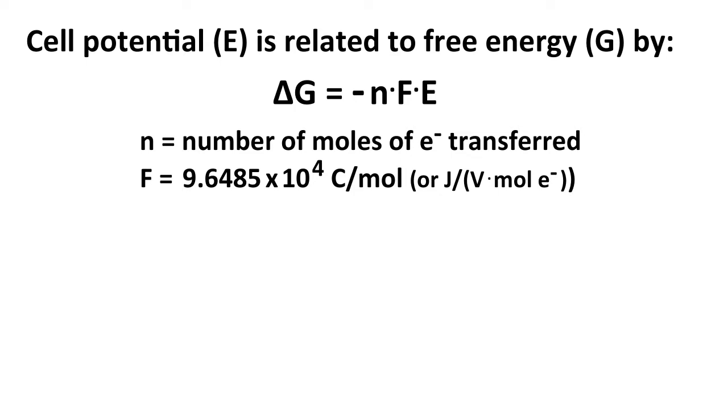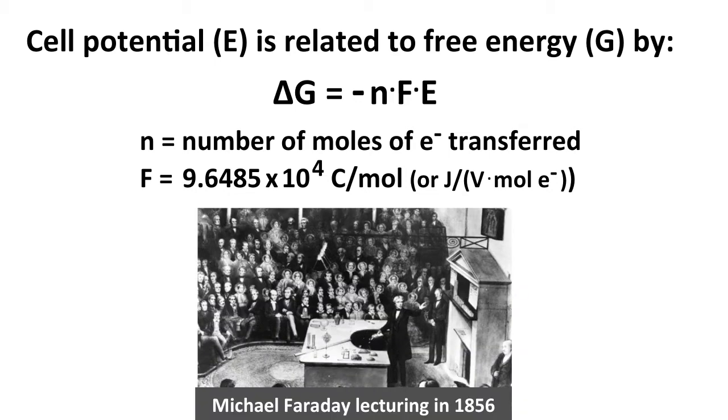N is the number of moles of electrons transferred during that electrochemical reaction. And F is the Faraday constant, which is 9.6485 times 10 to the fourth coulombs per mole, or other units are joules per volt mole. Basically, it's the charge of a mole of electrons in coulombs. It's named in honor of Michael Faraday, a scientist who did some groundbreaking work in electricity and magnetism. And here's a picture of Michael Faraday giving a public lecture in the mid-1800s.